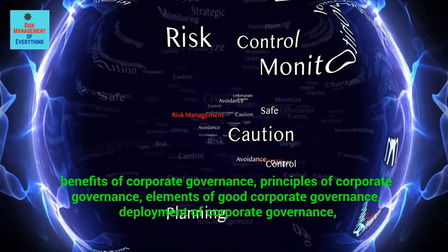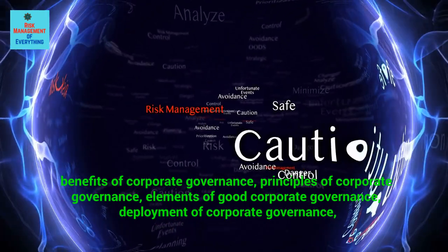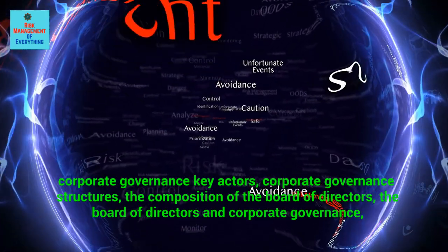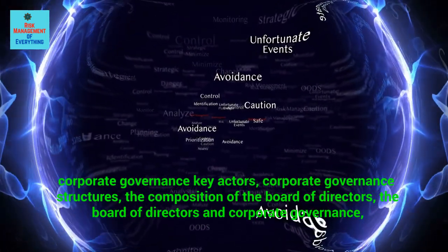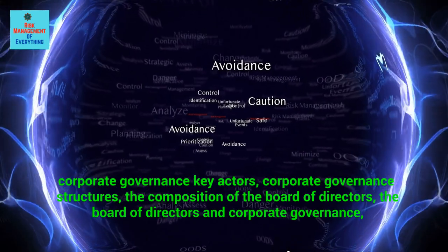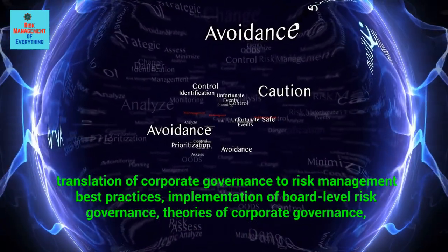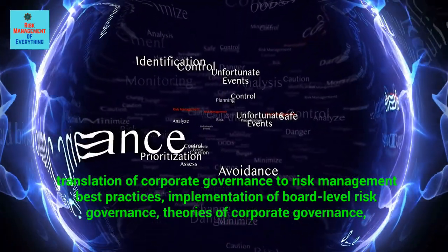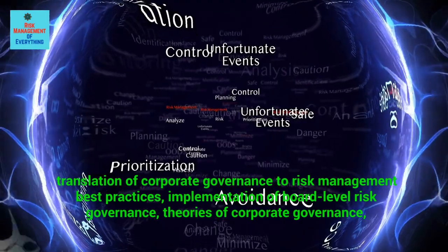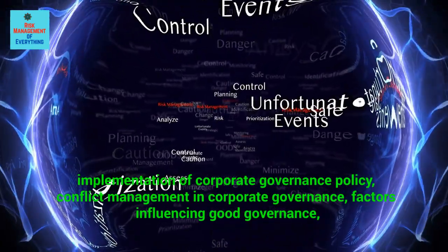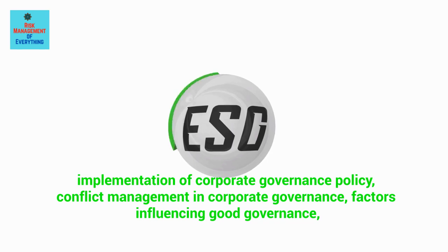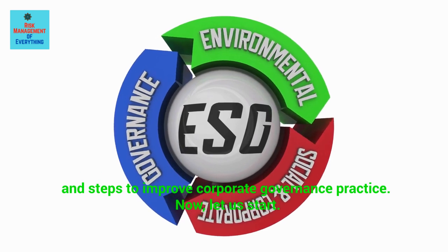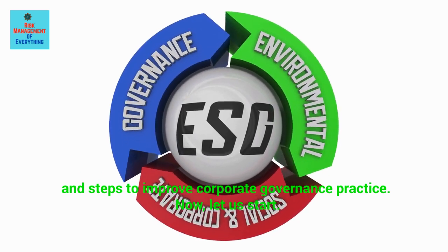Additional topics include: principles of corporate governance, elements of good corporate governance, deployment of corporate governance, corporate governance key actors, corporate governance structures, the composition of the board of directors, the board of directors and corporate governance, translation of corporate governance to risk management best practices, implementation of board-level risk governance, theories of corporate governance, implementation of corporate governance policy, conflict management in corporate governance, factors influencing good governance, and steps to improve corporate governance practice. Now let us start.